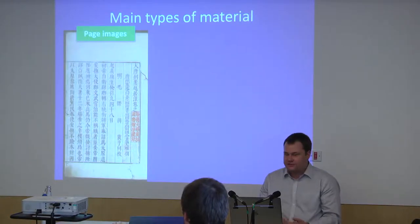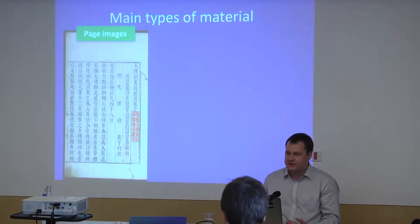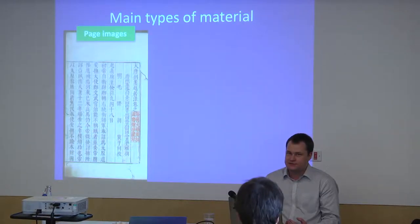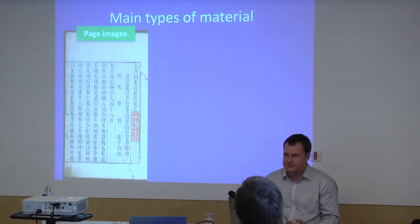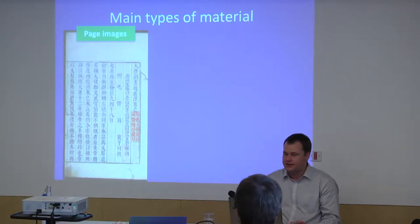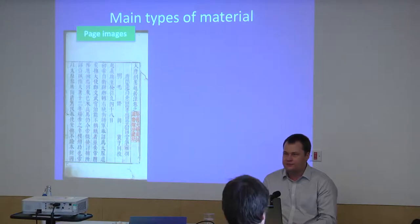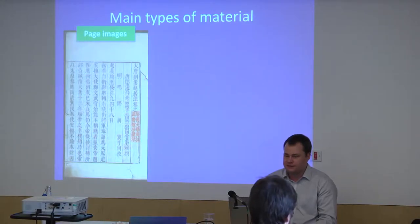There's a lot of data in this project, but the most fundamentally important types are images of historical editions of historical texts — so sequences of page images, like this one, which is a page image from a book in the Harvard Yenching Library. We have the whole Harvard Yenching Rare Books collection included in this project, along with material contributed by other libraries.